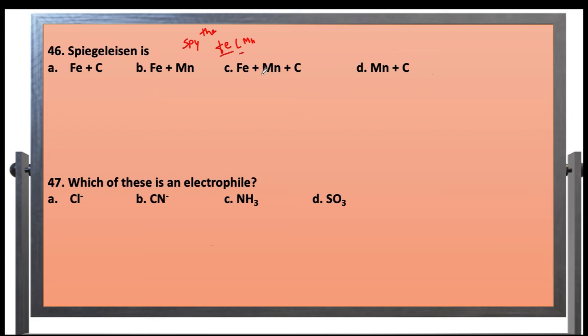Steel is composed of Fe (iron), C (carbon), and Mn (manganese). These are the elements present in steel. So the correct option for the composition of steel is Fe, C, and Mn.